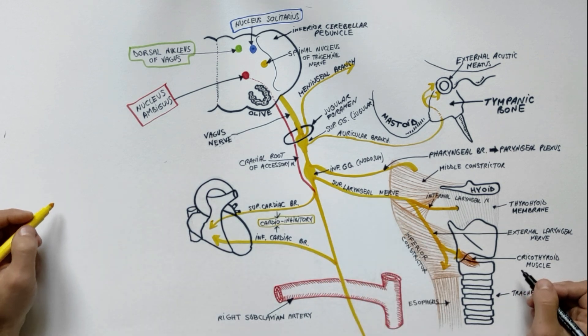We have one more branch to indicate from the vagus nerve in the head and neck region and this is the recurrent laryngeal nerve.